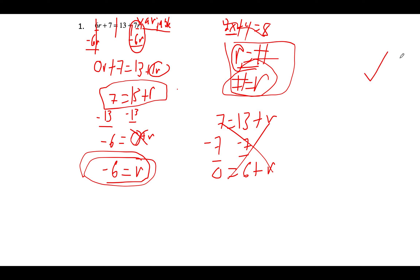Hi everybody, we're taking a look at what we did today in class. Today we worked on solving equations with variables on both sides of the equation. Normally we would solve an equation like 2x plus 4 equals 8, but in this case we want to have a variable on both sides. We're going to learn how to solve that today.